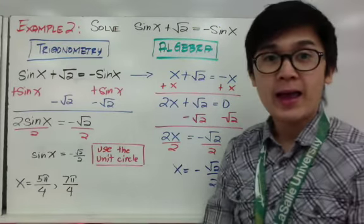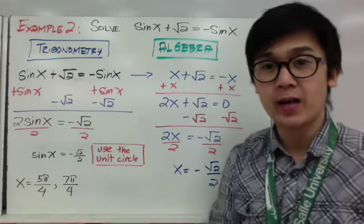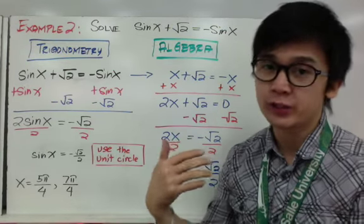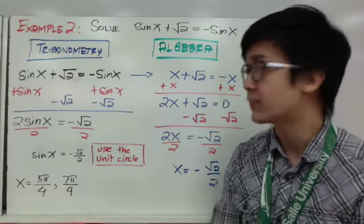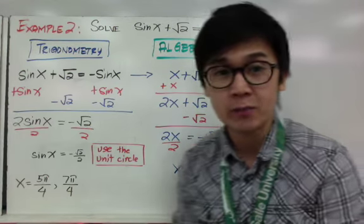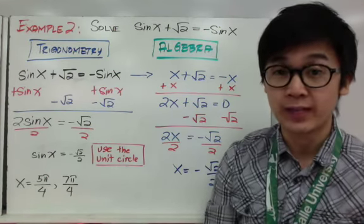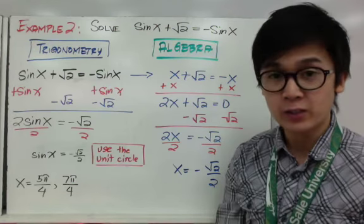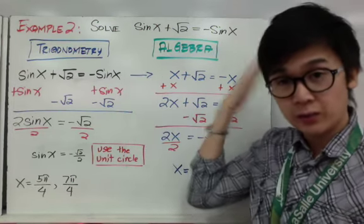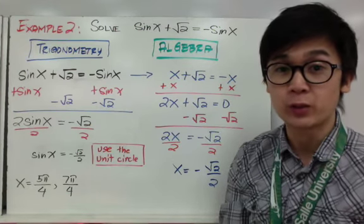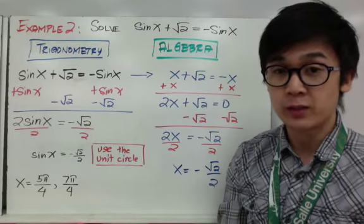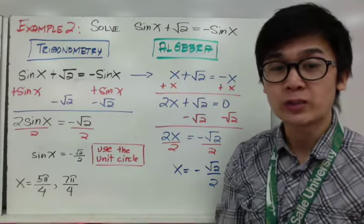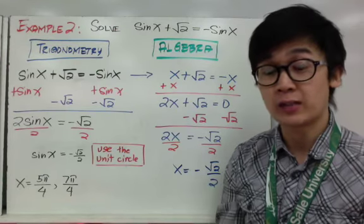For example 2: sine x + √2 = negative sine x. Converting to algebra by ignoring sine gives x + √2 = negative x. Add x to both sides: 2x + √2 = 0. Subtract √2 from both sides: 2x = negative √2. Divide both sides by 2: x = negative √2 over 2.